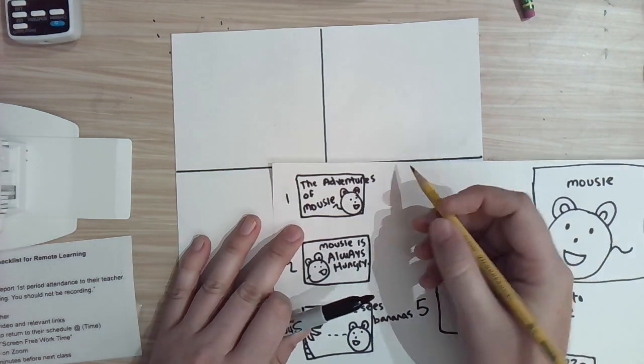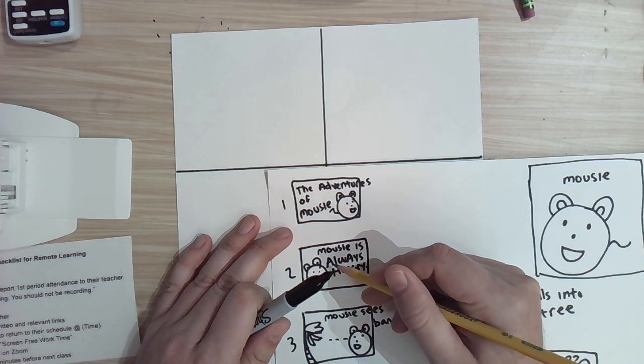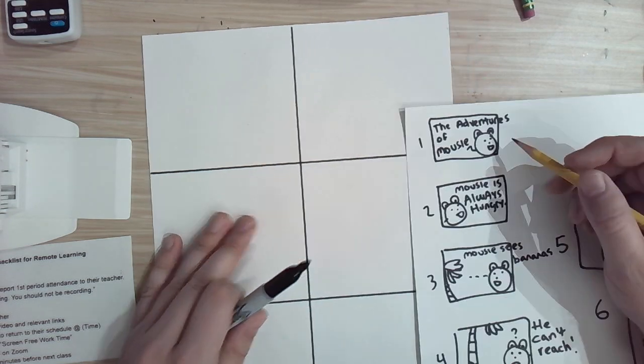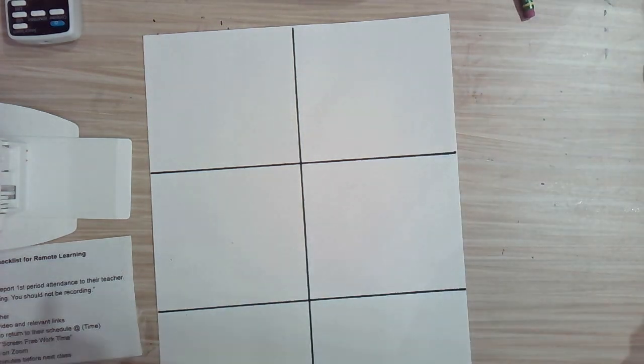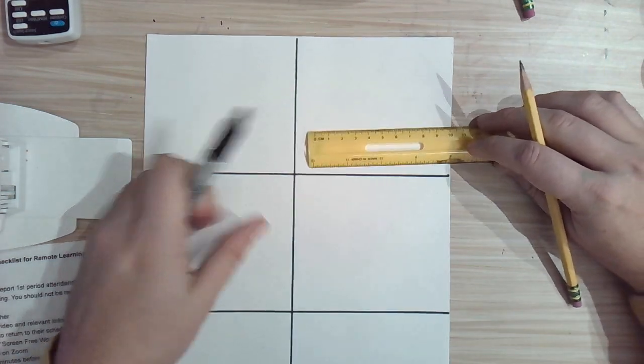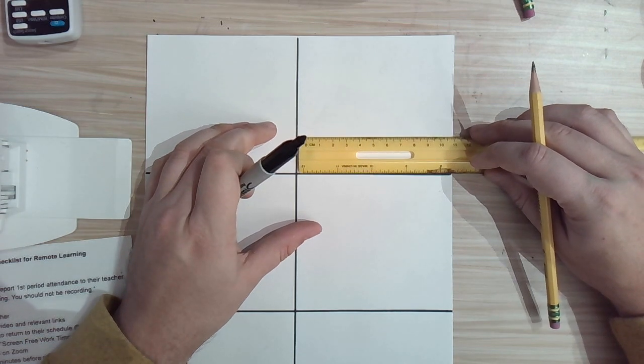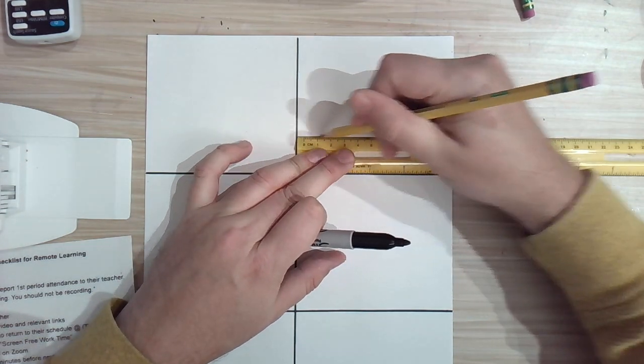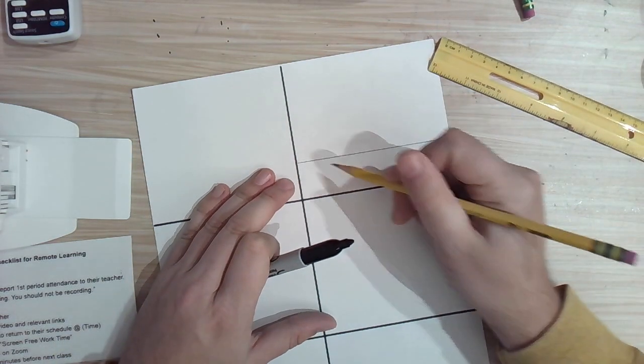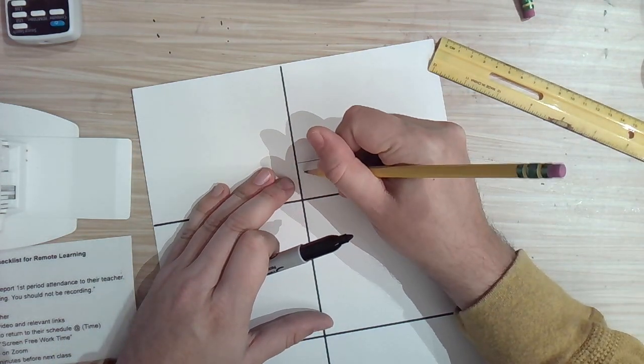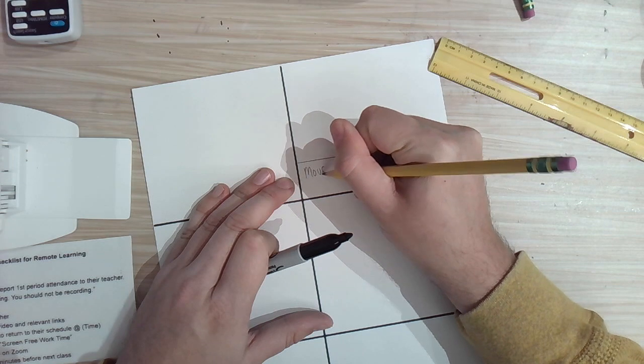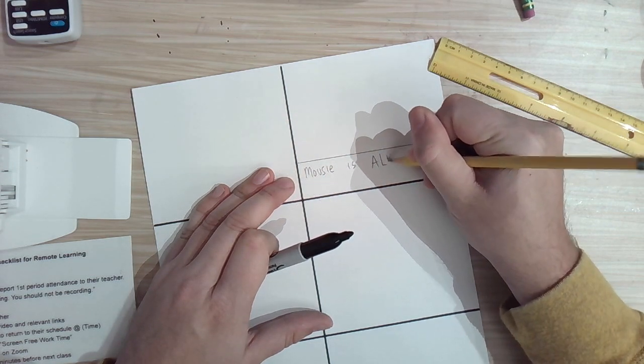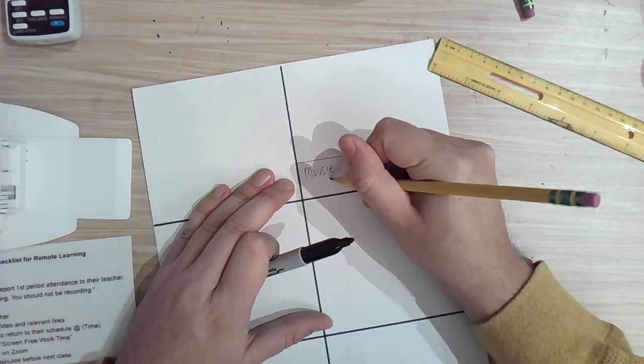Mousy is always hungry. That's going to need text, right? I don't know how I can tell you that with just a picture, that the mouse is always hungry. So what I'm going to want to do here is just create a space for writing. And I'm just going to trace my ruler here. And what I'll end up doing is writing, Mousy is always hungry.